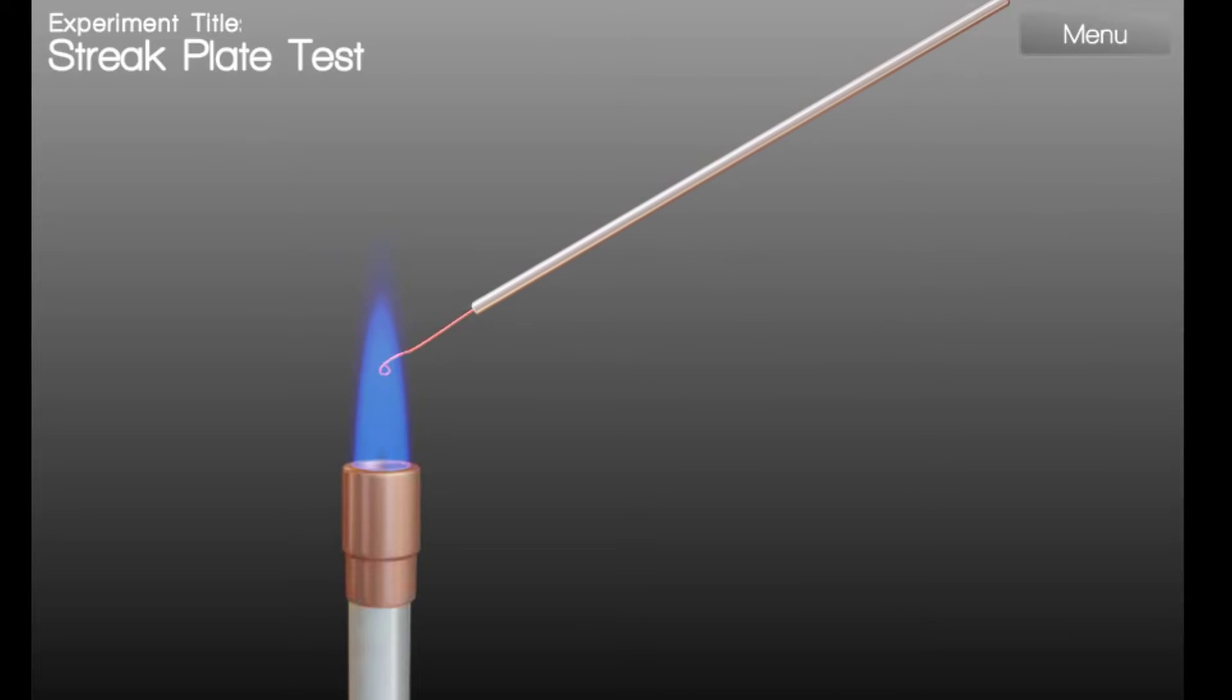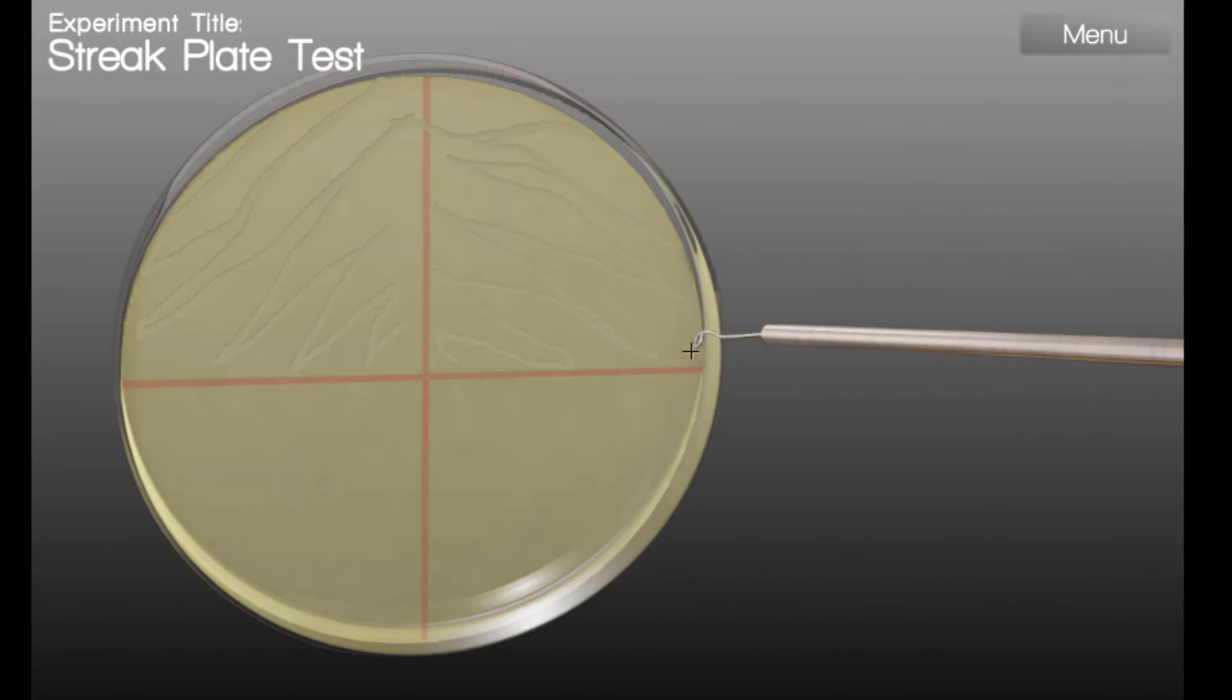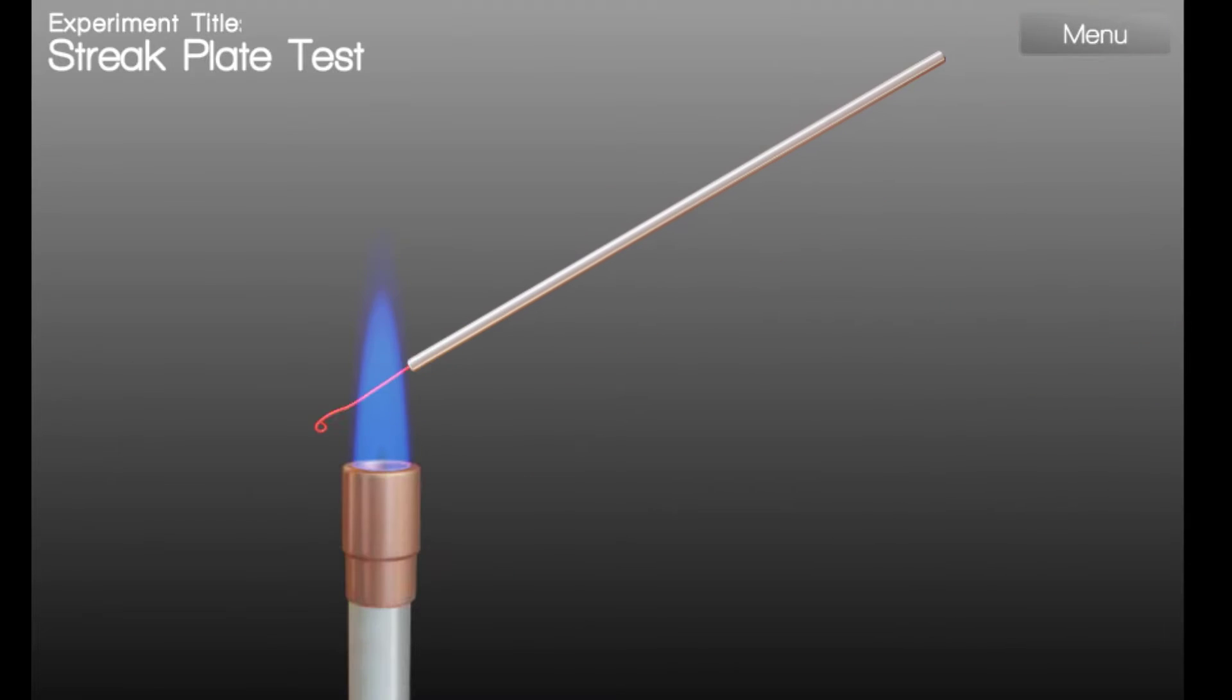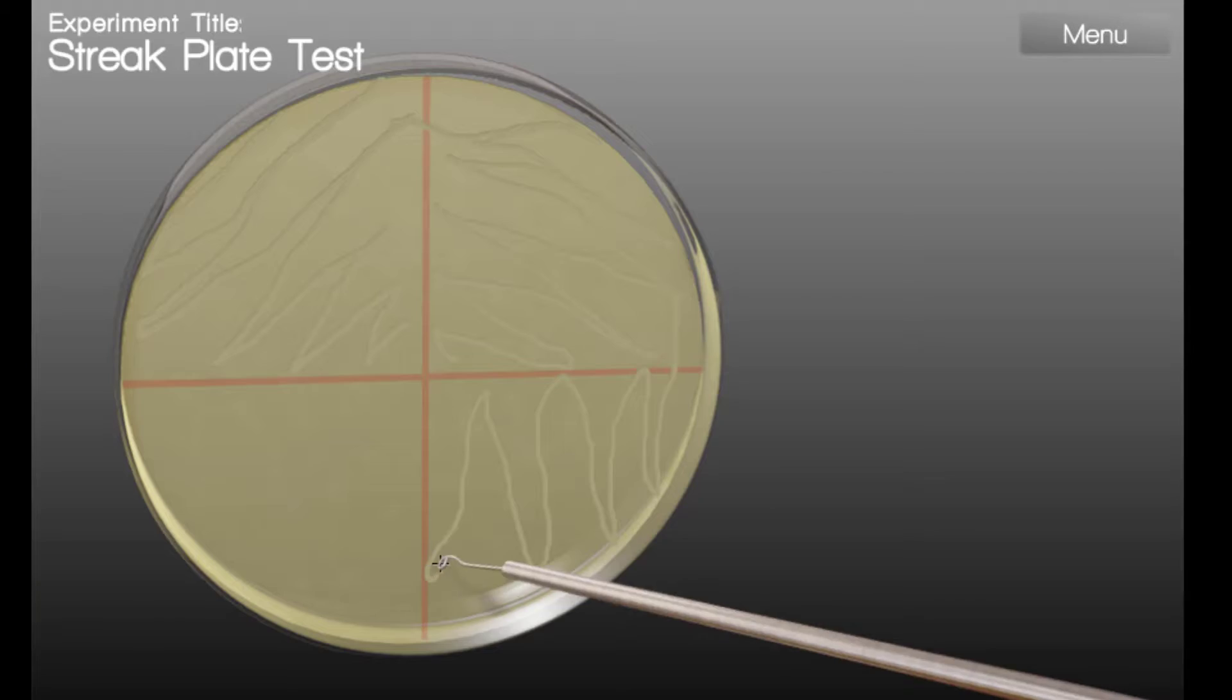Flame and cool the loop again. Turn the plate another 90 degrees and lightly sweep into the third quadrant of the plate. Flame and cool the loop once again. And finally, streak the remainder of the plate.